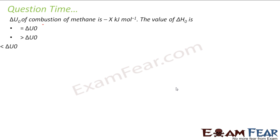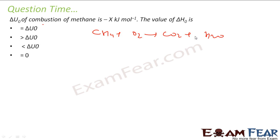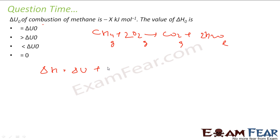The internal energy change for the combustion of methane is minus x kilojoule per mole; what is the value of delta H? Methane burns: CH4 + O2 → CO2 + H2O. Balance this equation — CH4 is gas, O2 is gas, CO2 is gas, and H2O is liquid. The formula is: delta H = delta U + delta n(gas) × R × T.